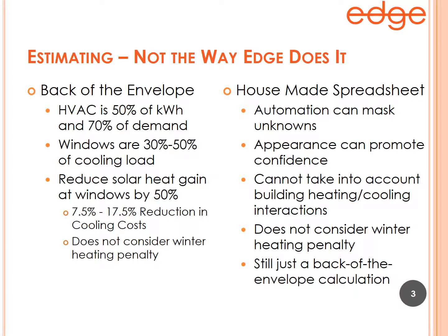A spreadsheet won't take that into account. It also won't consider the winter heating penalty — that is, when you add film to reduce heat in the summer, in most cases you also reduce the free heat you would get in the winter, and a spreadsheet cannot calculate that heating penalty.